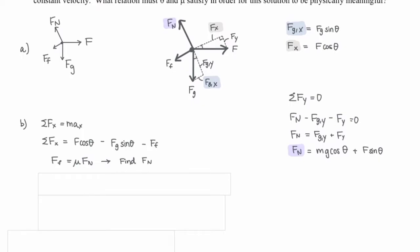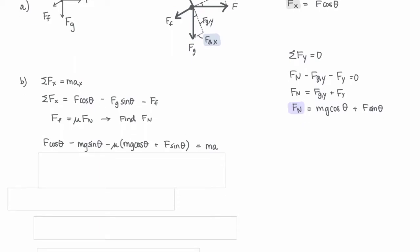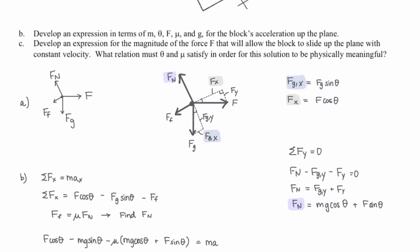Now we're ready to write out our expression to calculate acceleration. Those are all of our forces, and we can set that equal to mass times acceleration. We're pretty much done. We just need to divide by m on both sides, and that's going to be our expression for acceleration.